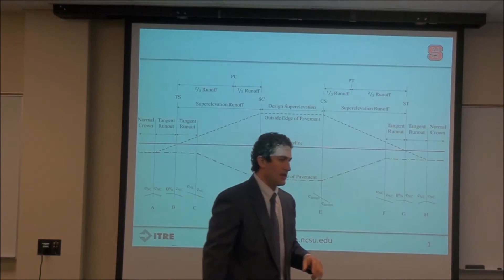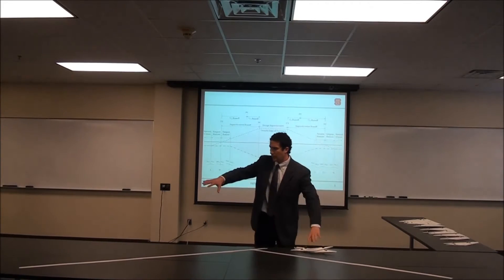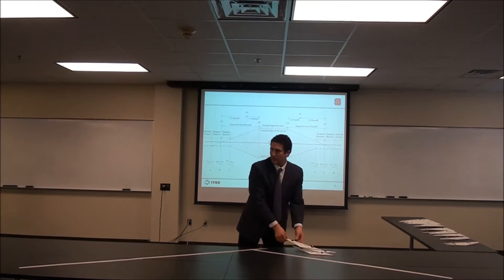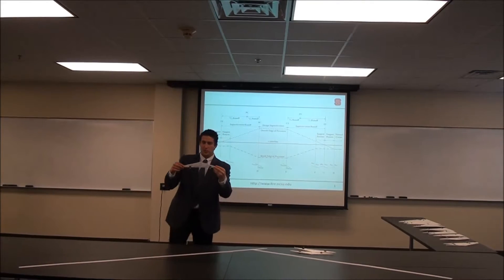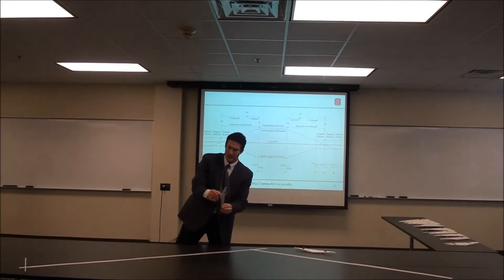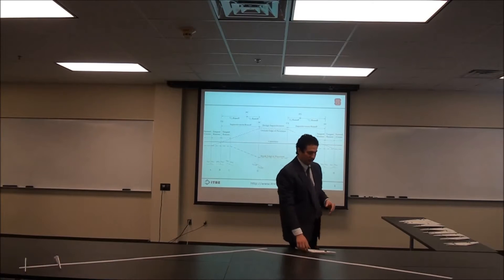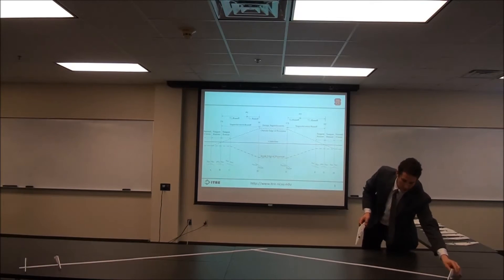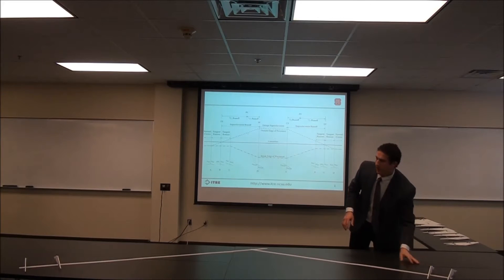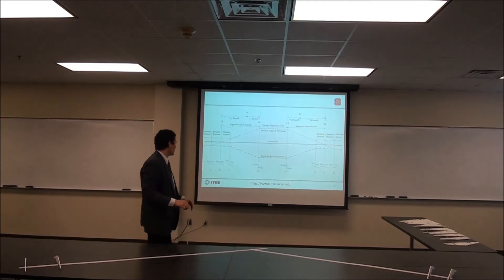Now looking at our three-dimensional object, we have laid out the back tangent and forward tangent. As we come along, the tangent will have normal crown for some distance as it continues. Normal crown will extend as far as the tangent goes on both sides, in both directions of the curve — a 2% slope falling away from the center line of the roadway, radiating outward from the curve in both directions.